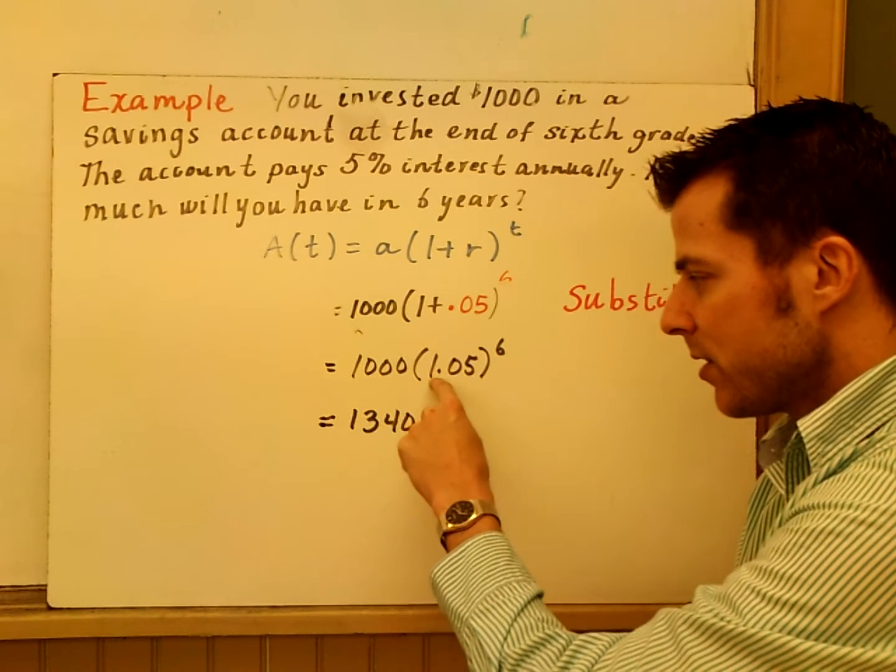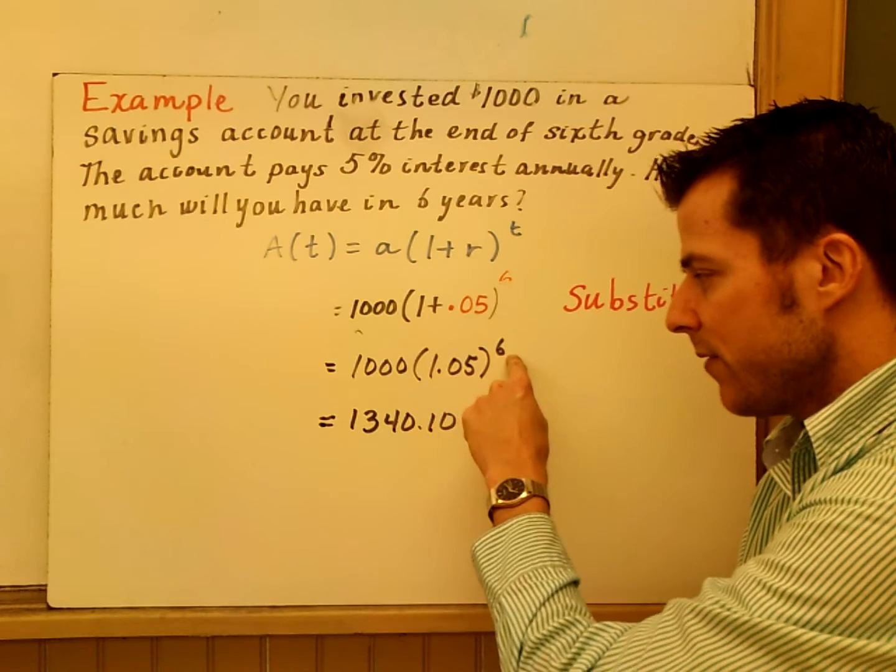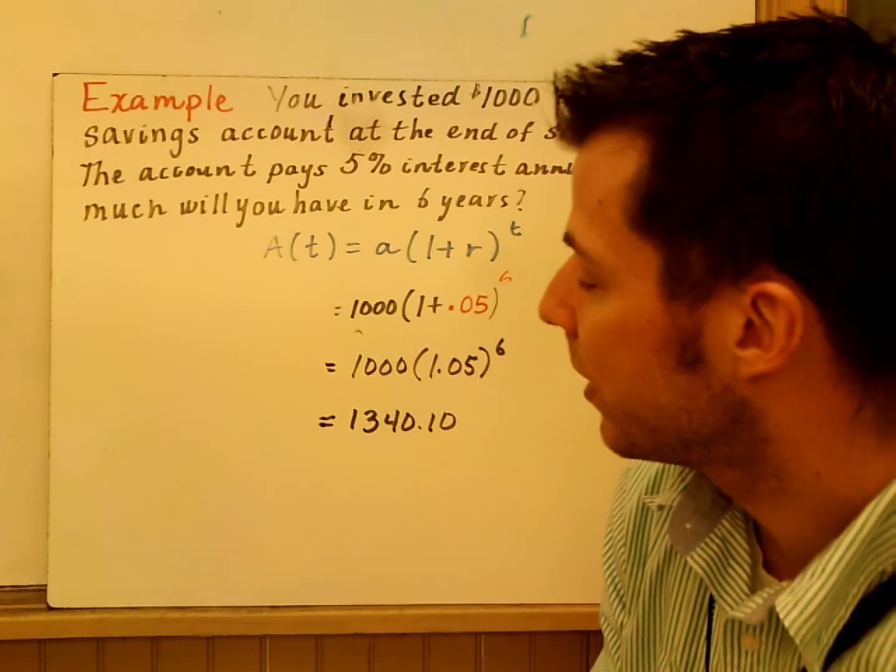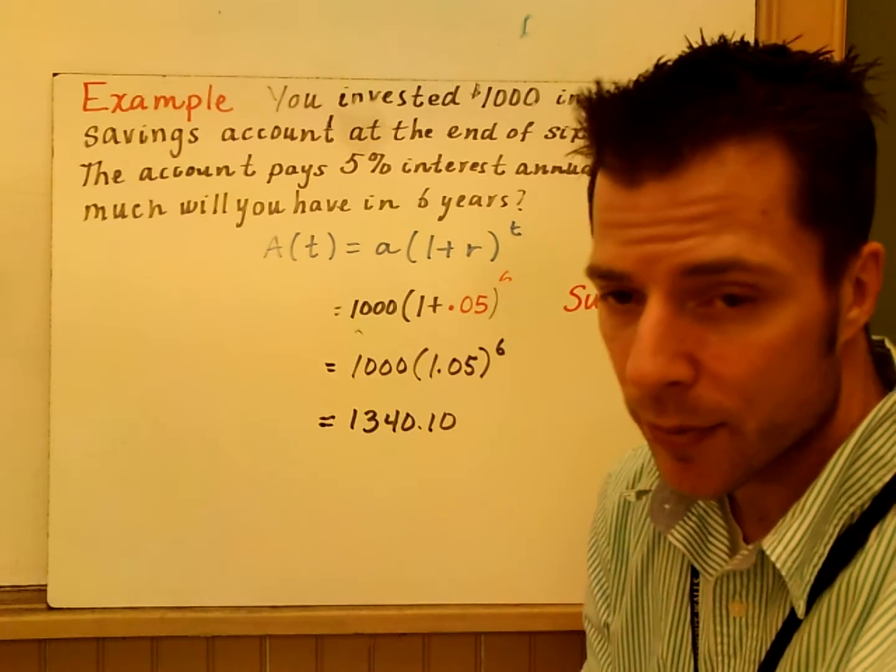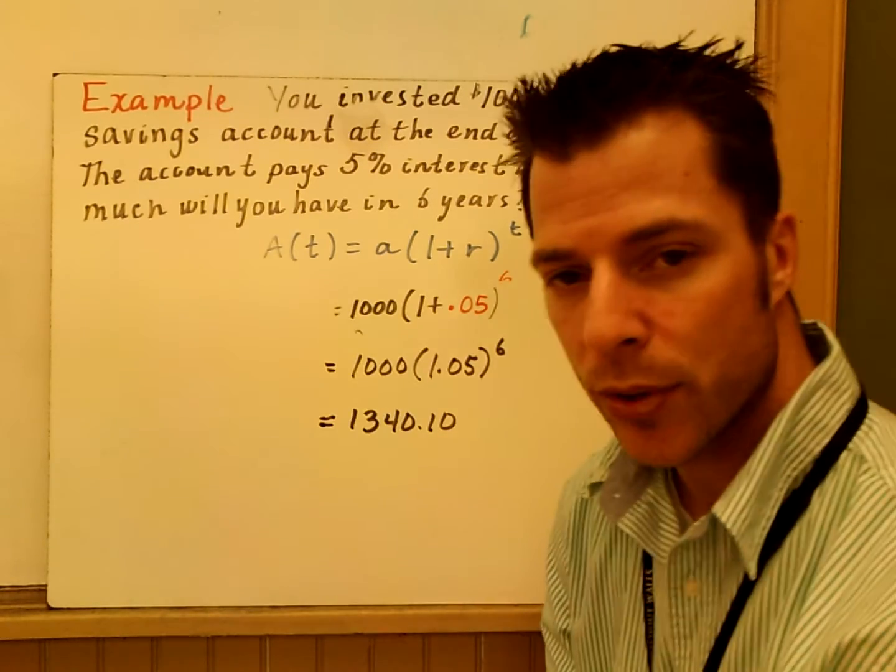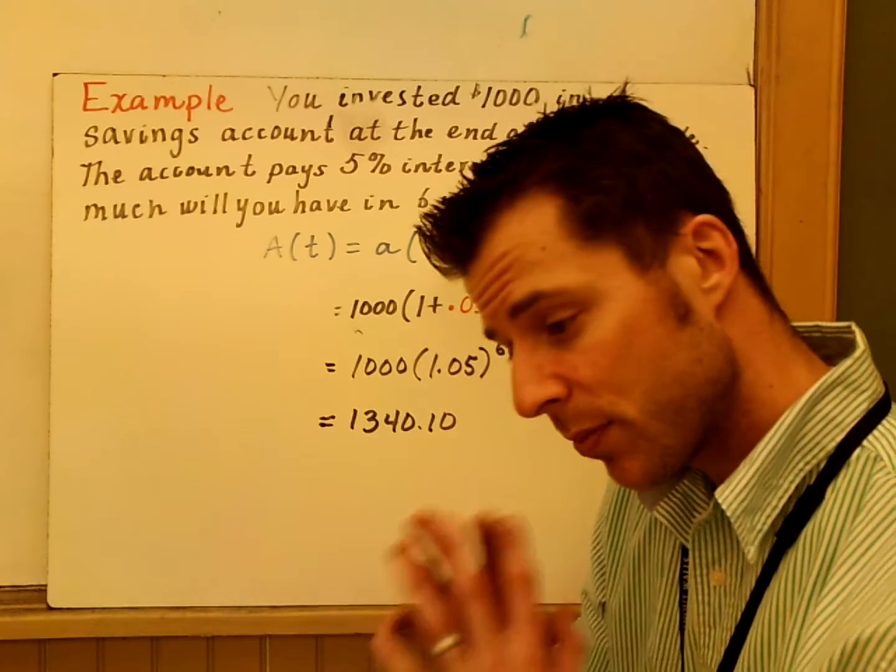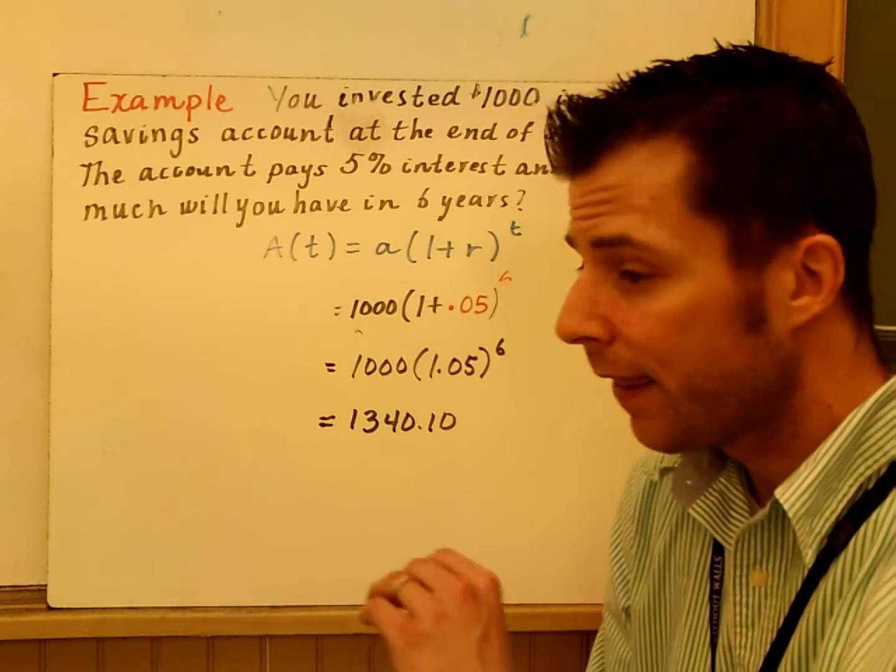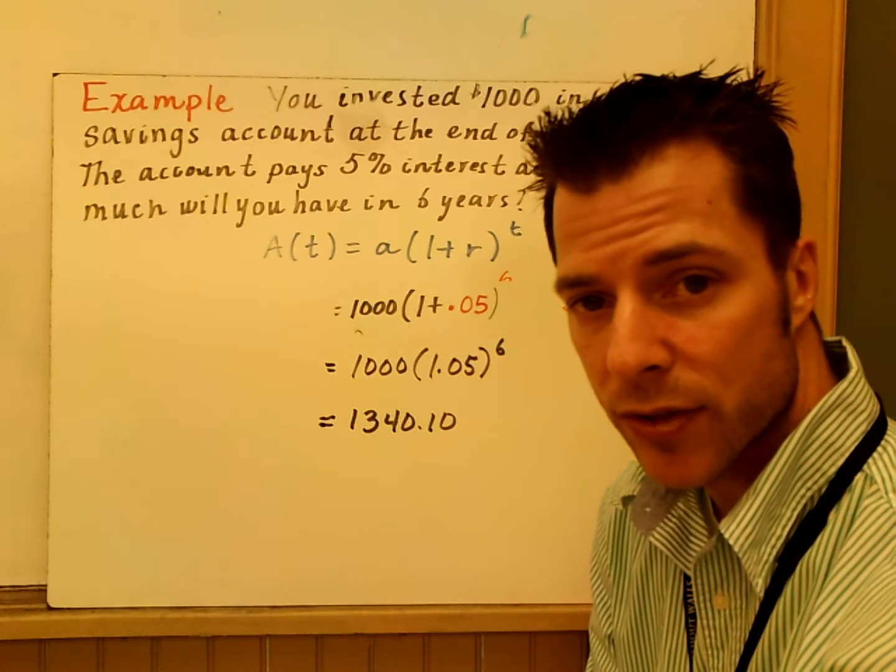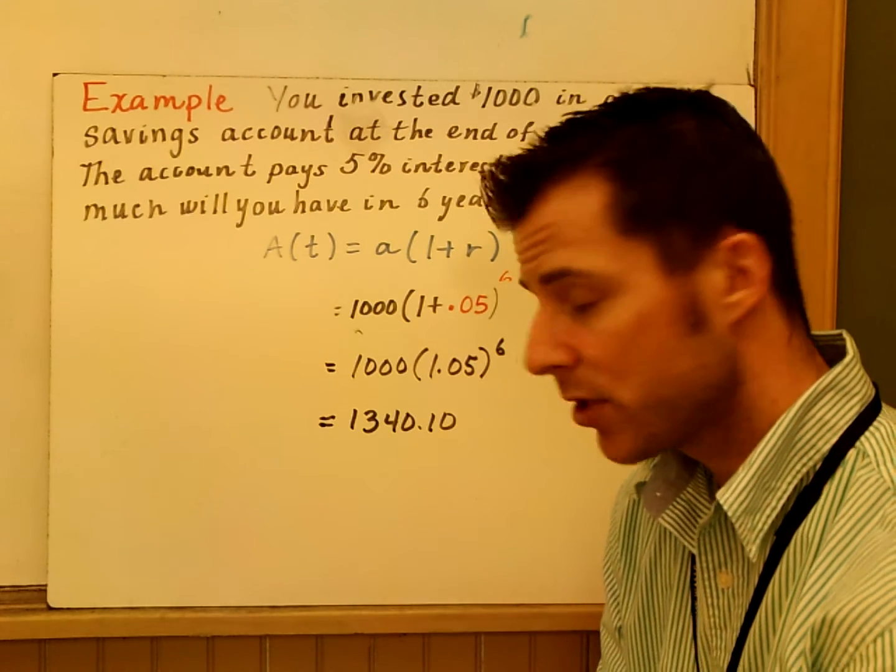And so, then I have 1,000 times 1.05 to the sixth. That's growth. And so, I will have approximately $1,340.10. And that's if I don't put any additional money into that. If I just put the $1,000 in there and say, I'll see you in six years, I've made $340 in interest. So, it's not much, but it is 5%.